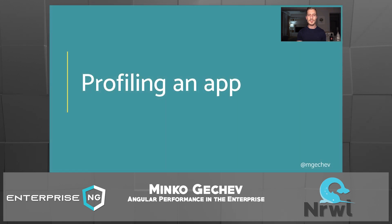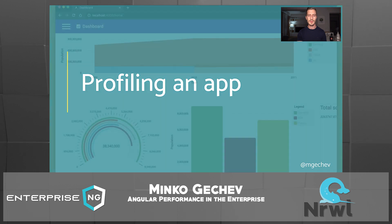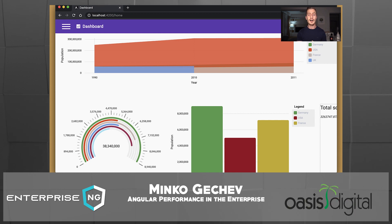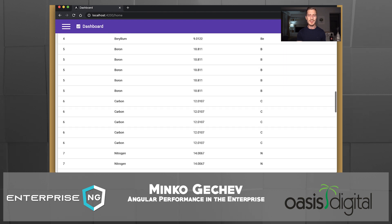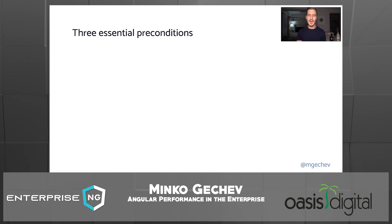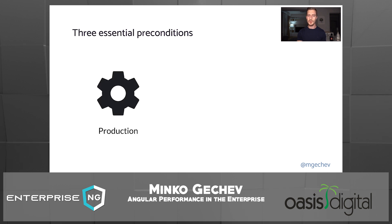Let us first look into how we can profile an application. For the video, I have built this dashboard. Here we have a few different charts, a widget showing an overall score for the data we have, a table, and at the bottom just a bunch of links. To profile this app, we need to keep in mind the following three essential preconditions. When building the project, we need to ensure the CLI is using its production environment.